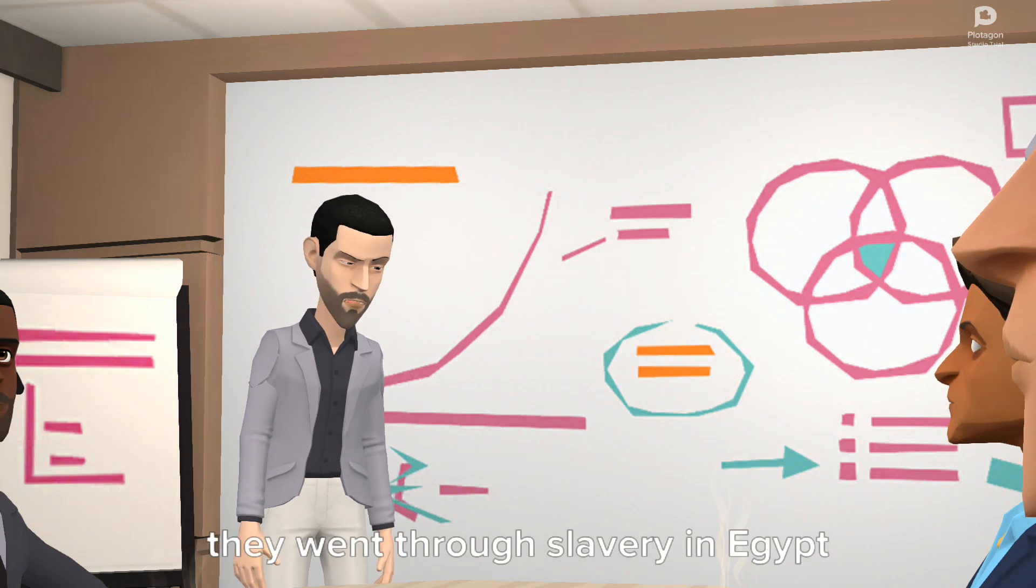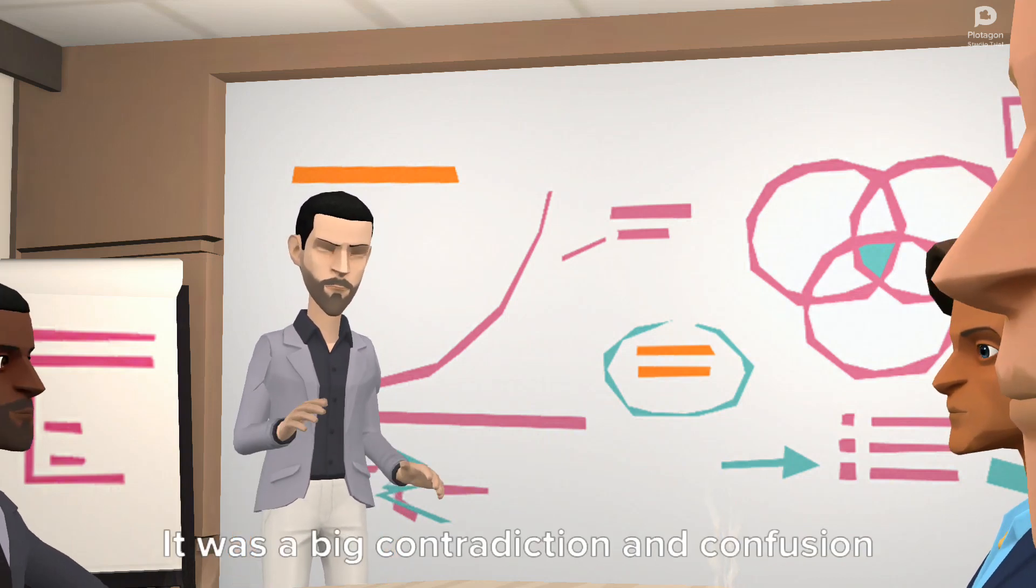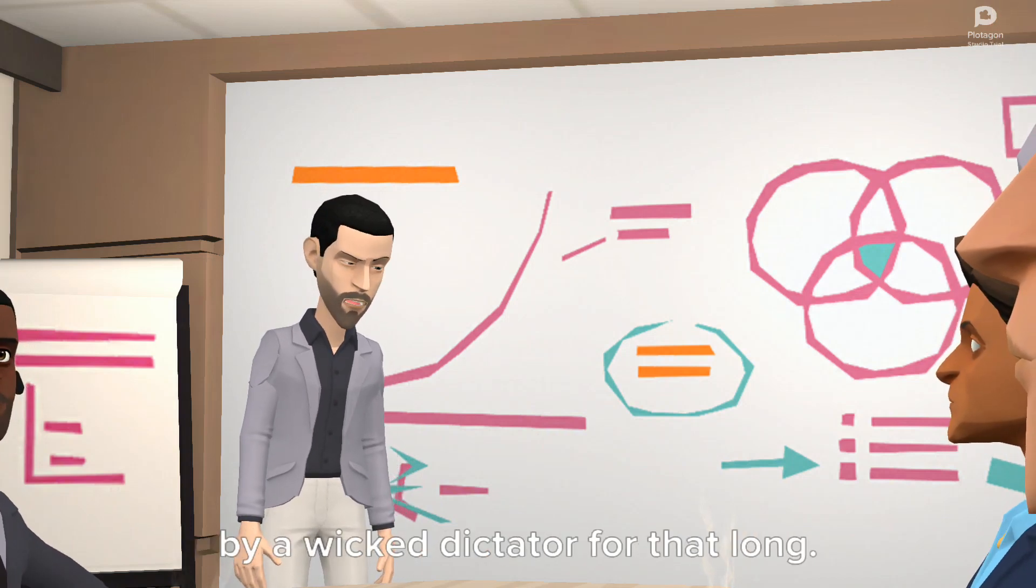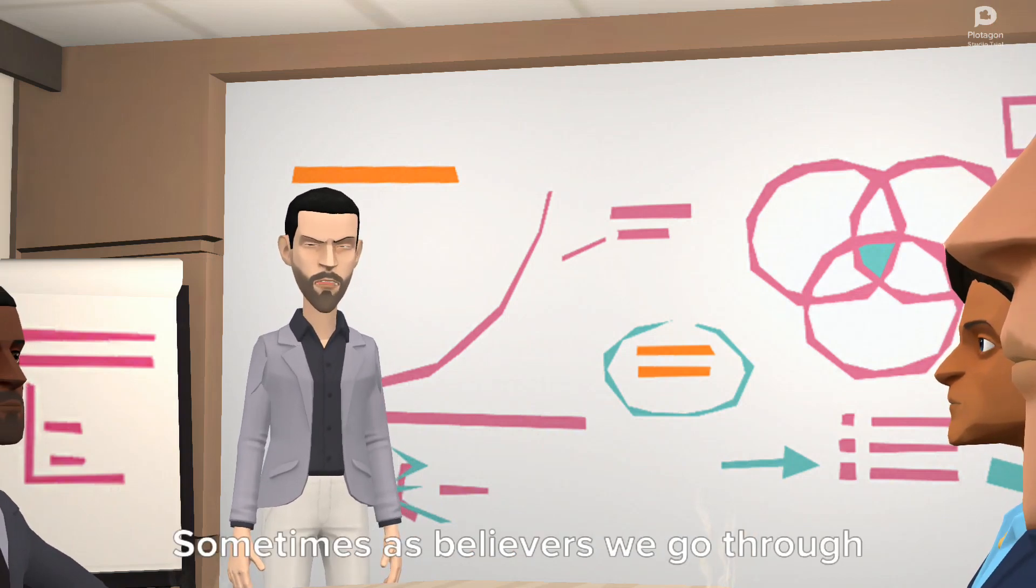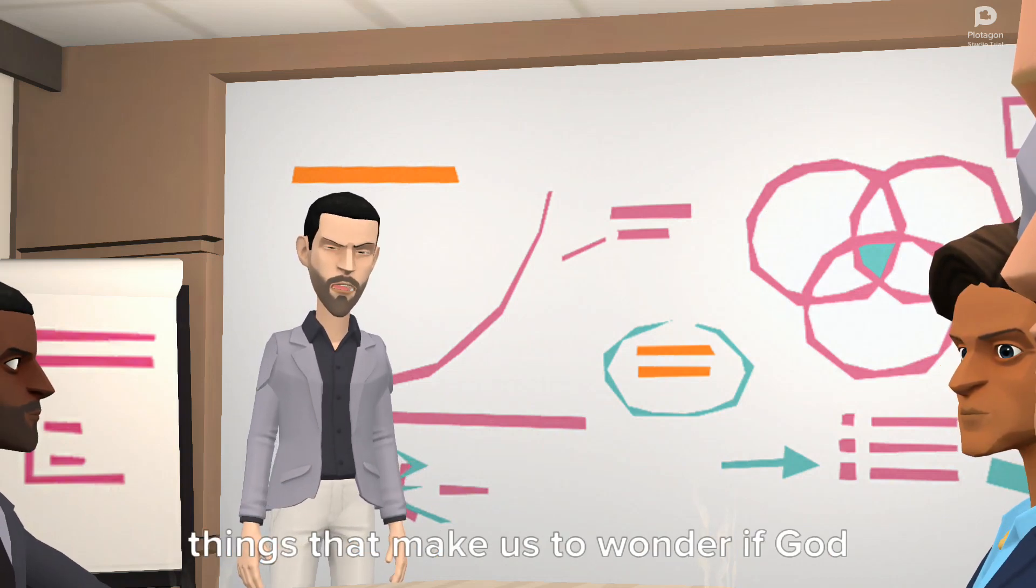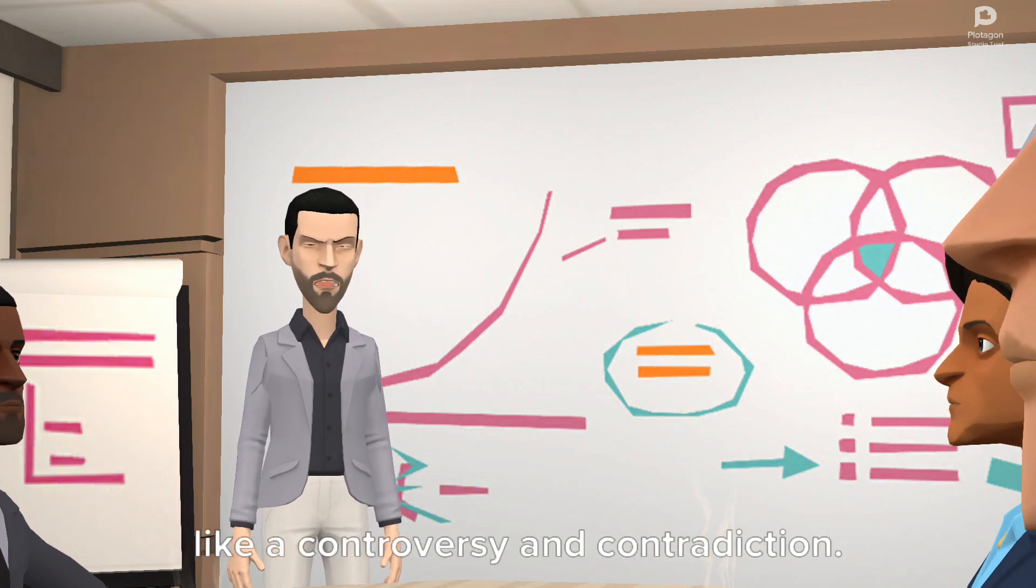Although Israel was God's firstborn, they went through slavery in Egypt for over 400 years. It was a big contradiction and confusion that God's choicest people were enslaved by a wicked dictator for that long. Sometimes as believers we go through things that make us wonder if God is with us. We experience challenges that look like a controversy and contradiction.